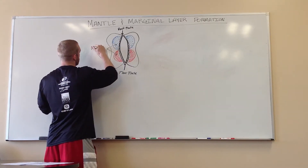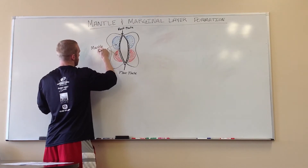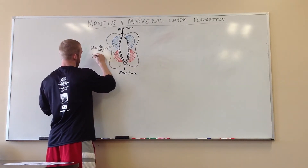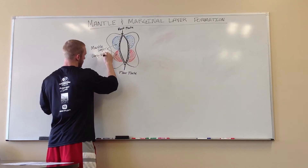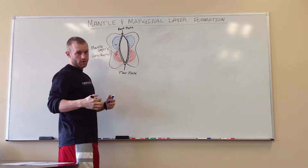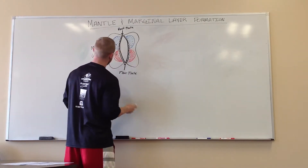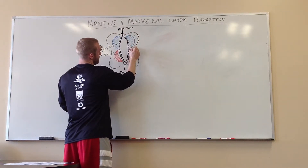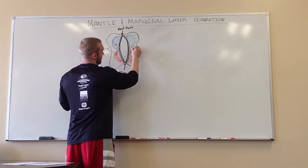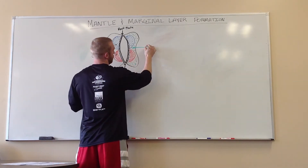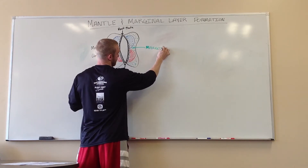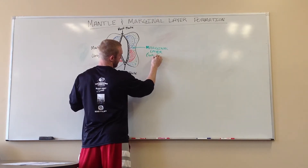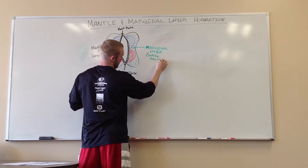These two things are the mantle layer. This is going to be our gray matter, which is why it's called the inner layer. I'm going to put green dots out here on one side — but this happens on both sides. This is going to be our marginal layer, which is going to be our white matter.